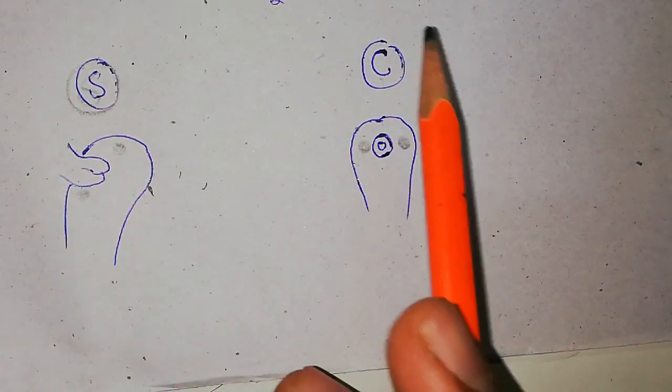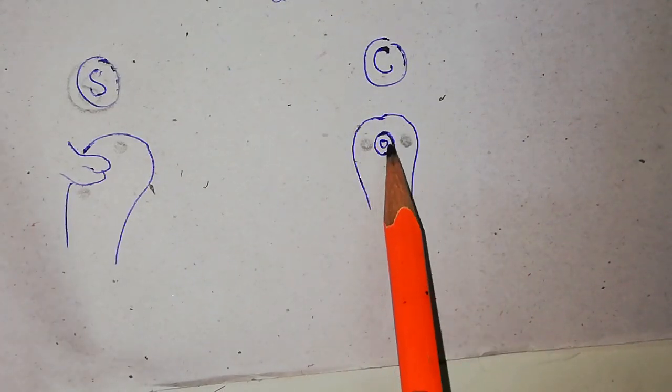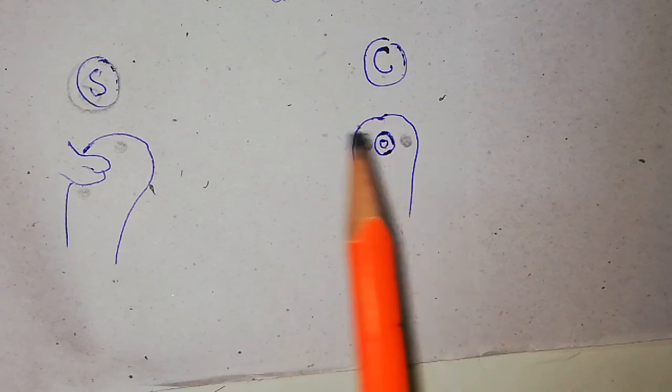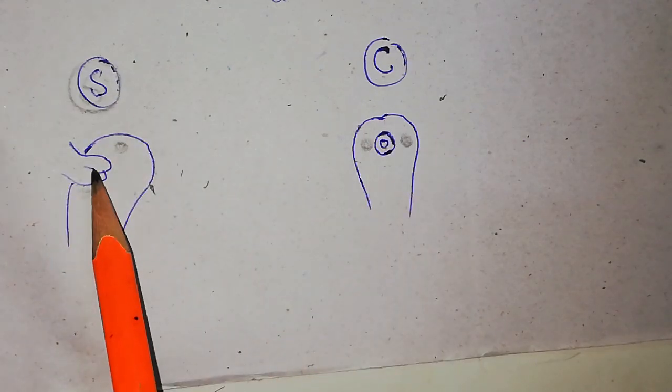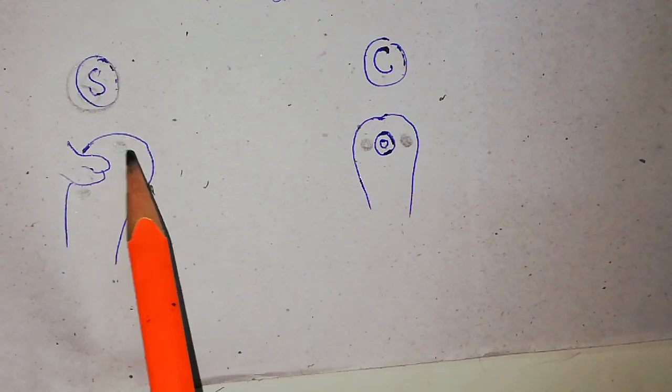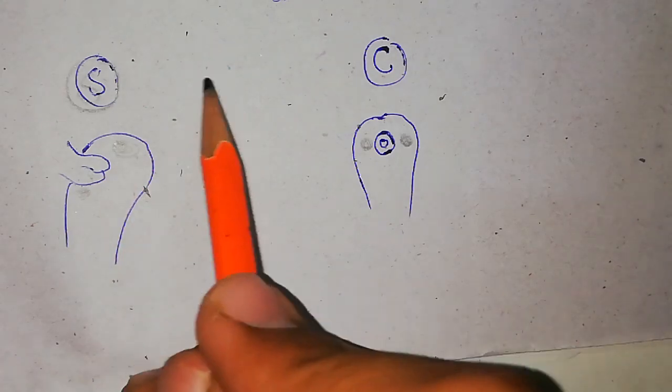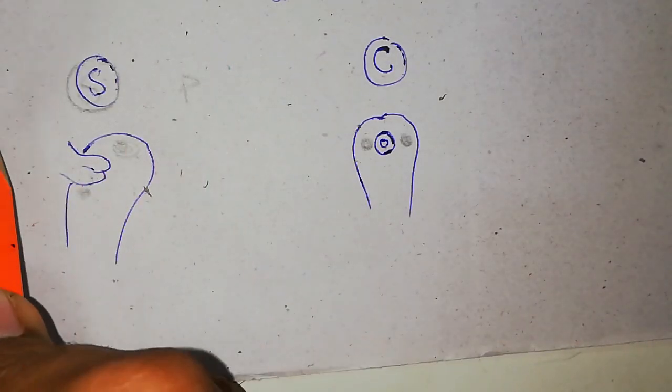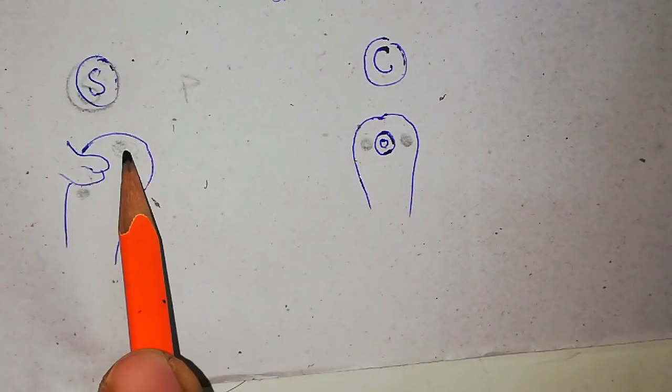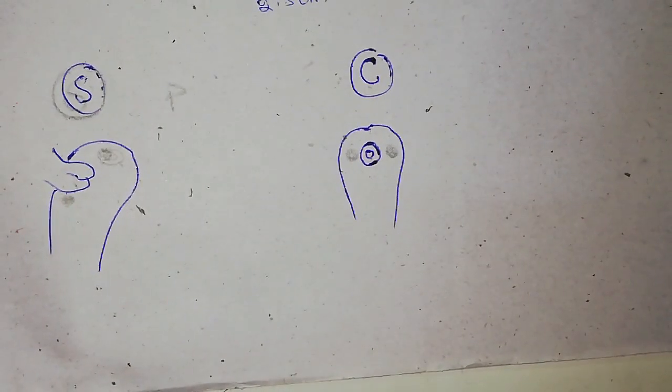In this diagram I have taken two sections: sagittal section of vagina and coronal section of vagina. In the coronal section, this is the entrance of the cervix, whereas in sagittal section this is the entrance of cervix. We can see two spaces here. This space on the posterior side of the cervix is called posterior fornix of vagina.